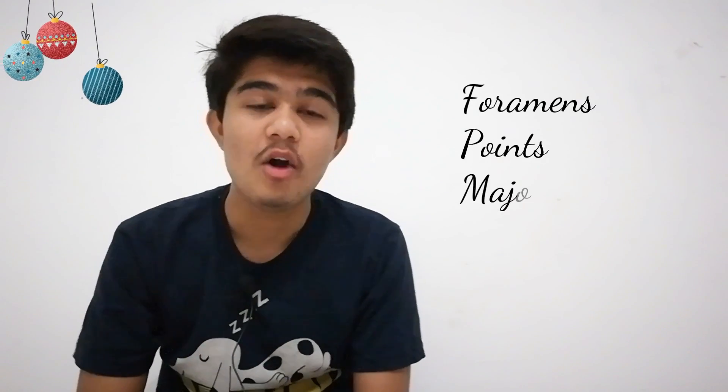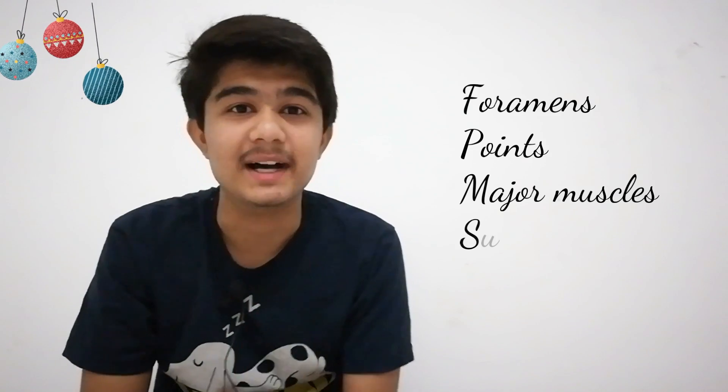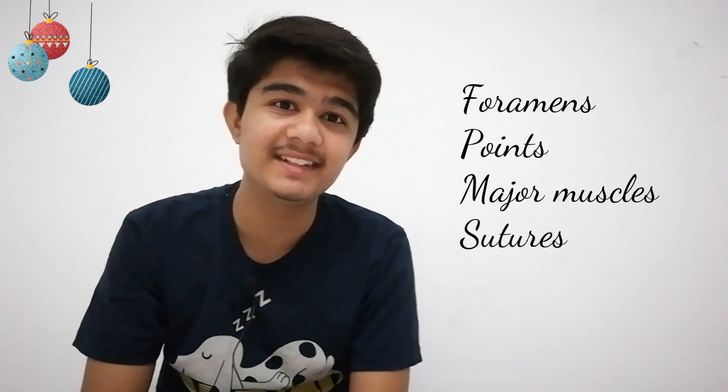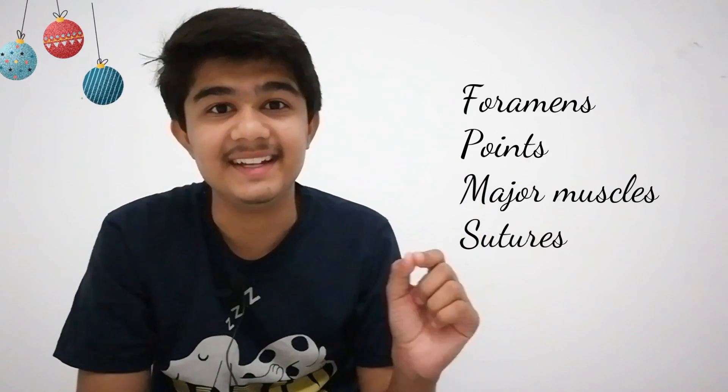For skull bones, if you don't know all parts it's okay, but the names of the foramina and which structure passes through each foramen is the most common thing you have to remember. The muscle attachments at famous places like the styloid process are also asked. The skull points — the vertex, bregma, and other points — are commonly asked.